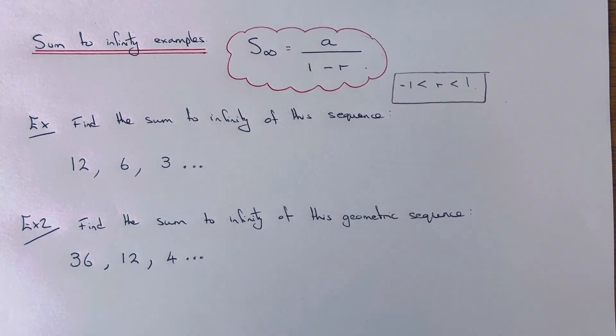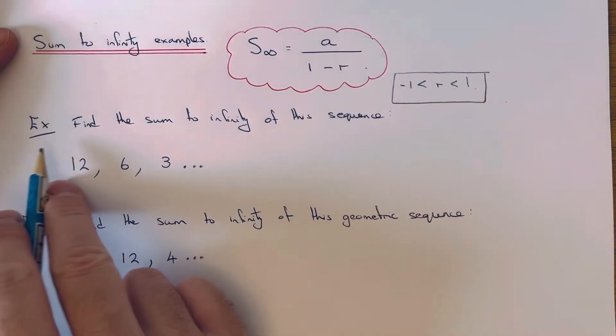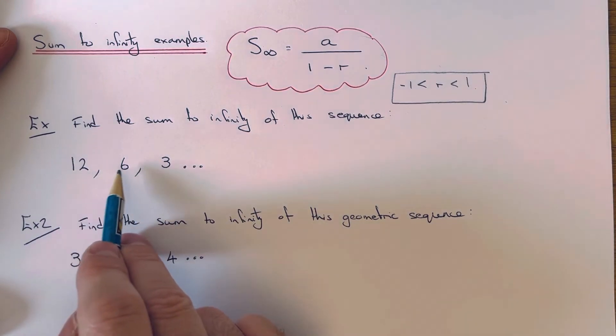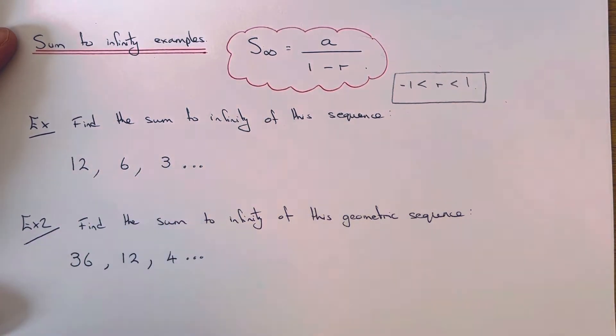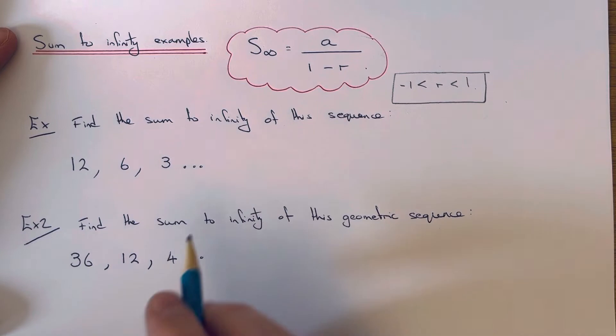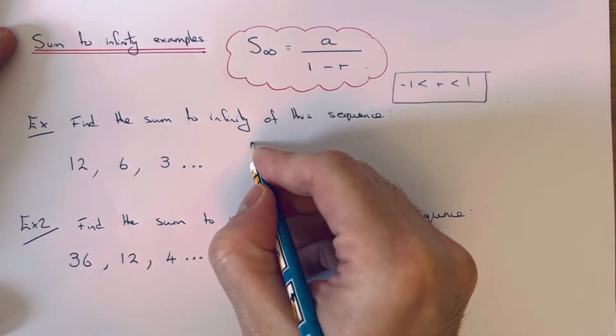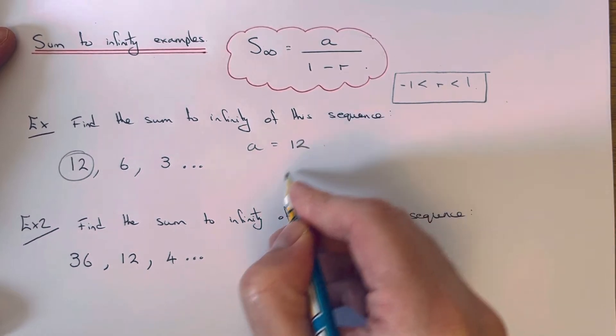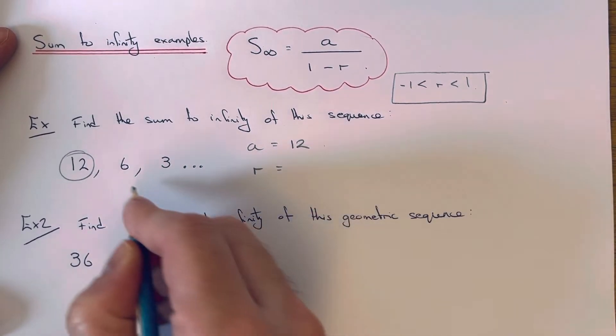Because the sum will not converge. Okay, so let's have a look at the examples, two examples we have here. So our first one is 12, 6, 3. So we've got to work out the sum to infinity. We can see our first term of our sequence is 12.